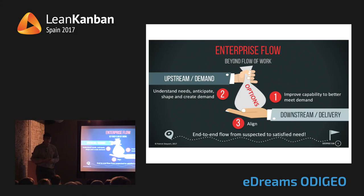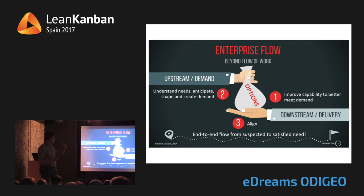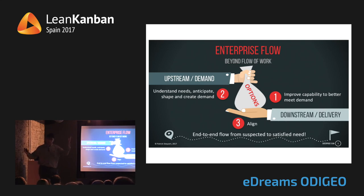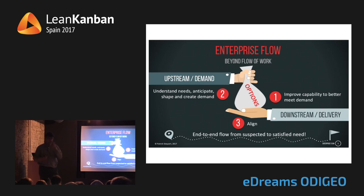If we're thinking about flow in terms of business agility, it's not just flow of work downstream — not only about optimizing your capability to meet demand. It's also about better understanding needs, anticipating, shaping, creating demand — the upstream side. We're talking about end-to-end flow: from the genesis of an idea to the realization of that idea, from a suspected need to a satisfied need. And then the balance and alignment between the upstream and the downstream.